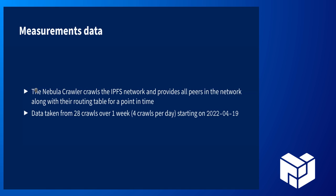To measure the health of the actual network, we use the Nebula crawler, which crawls the network and provides a snapshot of all peers that are online and the state of each node's routing table. For this specific study, the data was taken from 28 crawls — 28 snapshots of the network over one week.